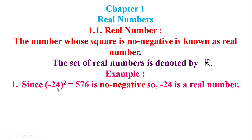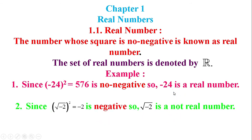The square of the square root of minus 2 is minus 2, which is negative — that means it is not non-negative — and that is why the square root of minus 2 is not a real number.